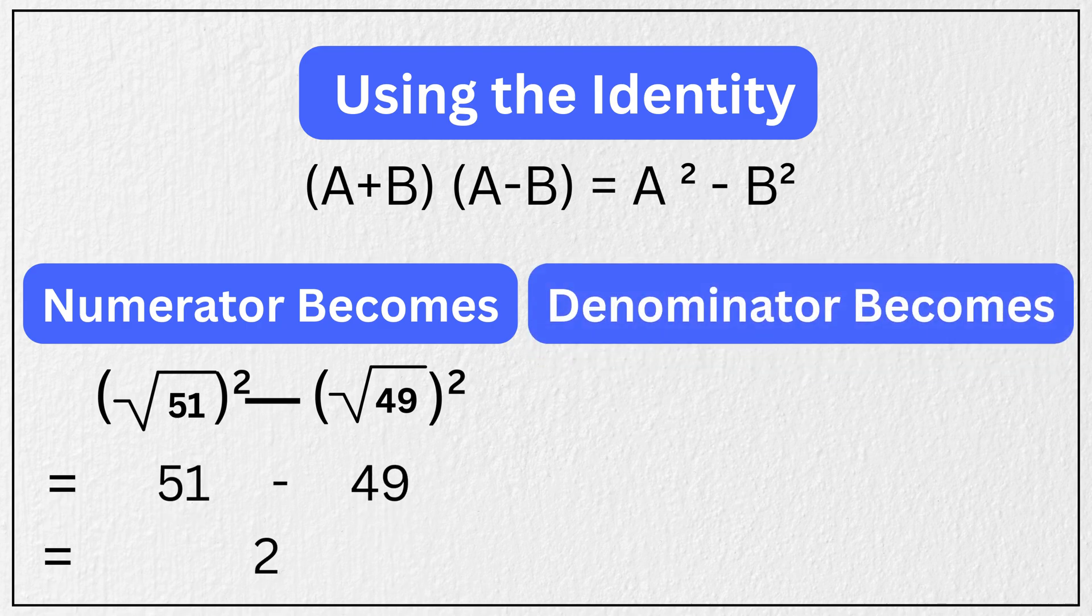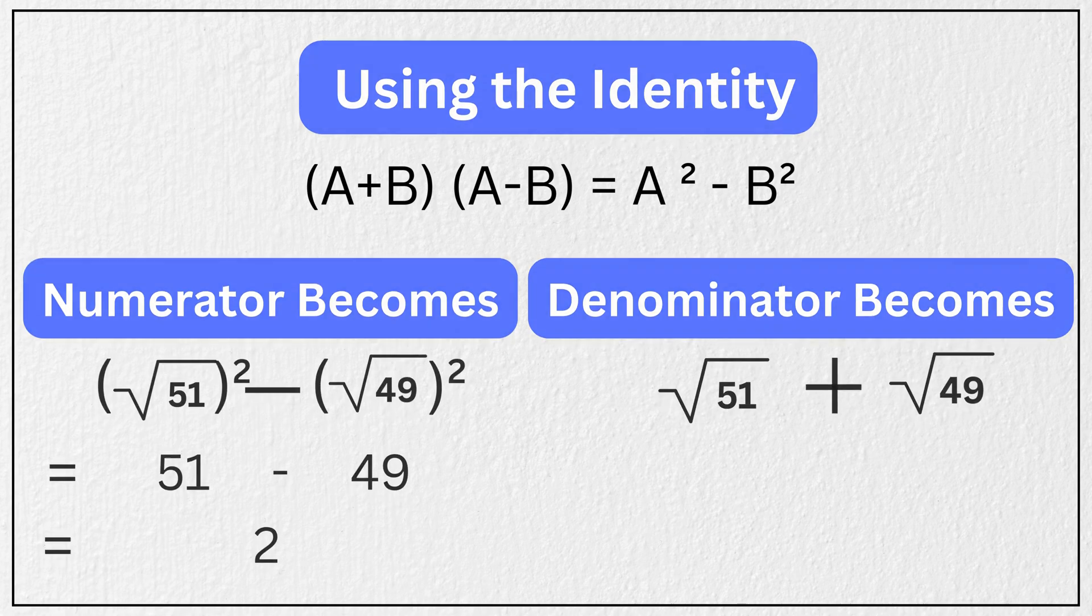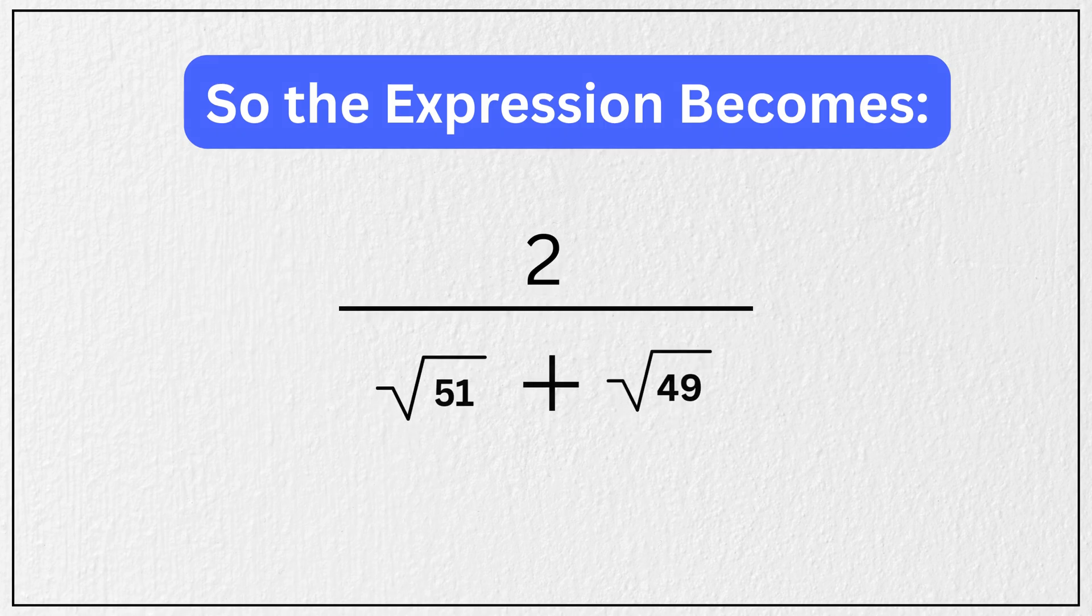The denominator becomes √51 + √49. So the expression becomes 2 ÷ (√51 + √49).